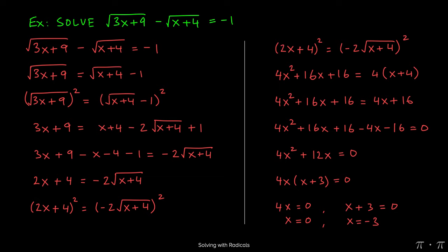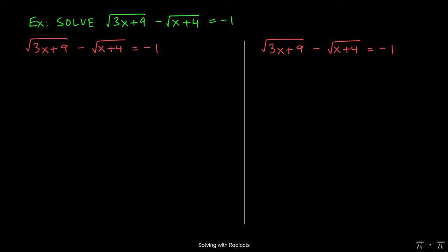This gives us two potential solutions, and since the indices in the problem were even, we have to check our answers. On the left-hand side we replace all the x's with zeros. 3 times 0 is just 0, and 0 plus 4 in the other radical is simply 4.